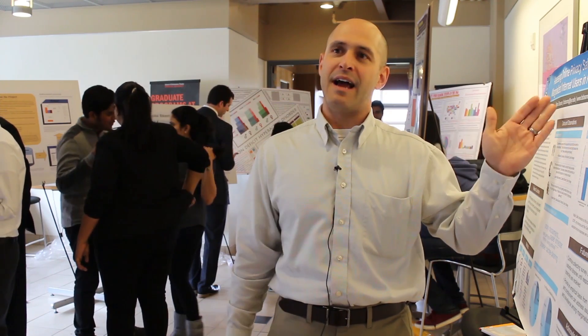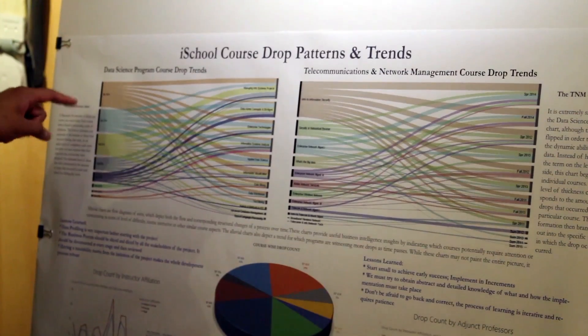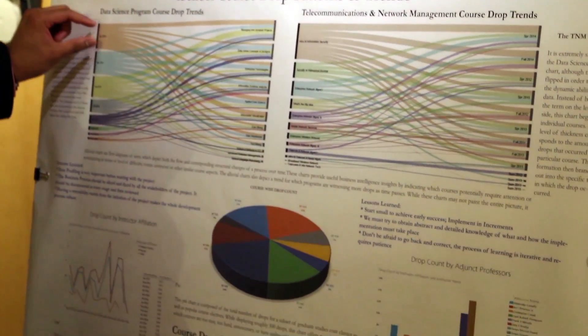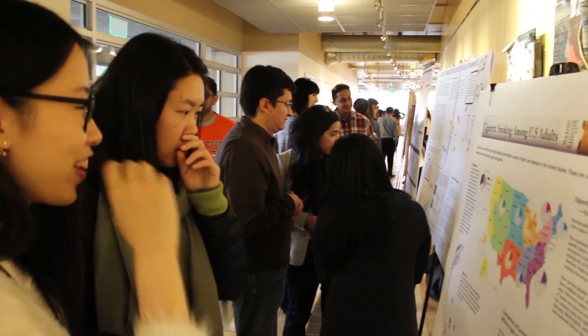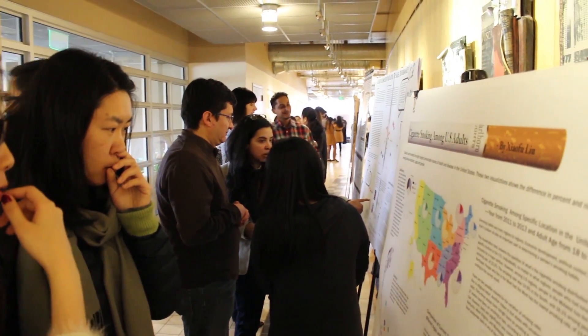Some students are analyzing drop patterns — like why students drop certain classes. Another group is looking at how we schedule classes, the rooms we use, and whether or not we're filling them to capacity. I'm hoping that at least they learn how to use real data so that when they go out there in the workforce they're ready.